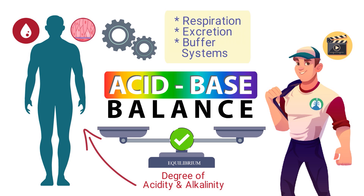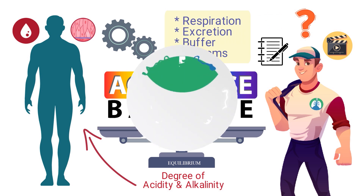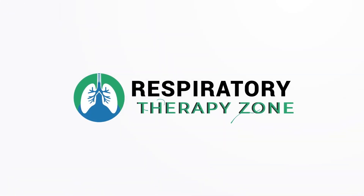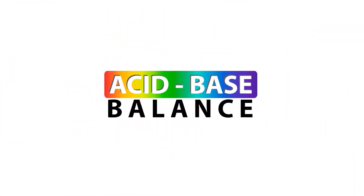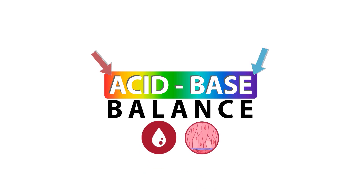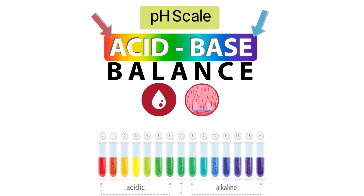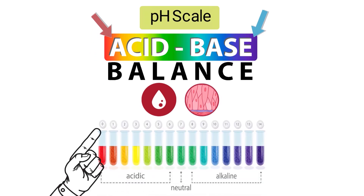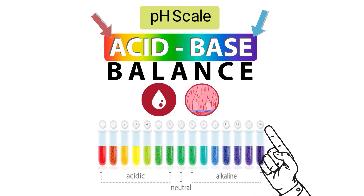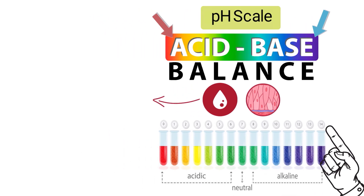In this video, we will discuss the role of acid-base balance in the body and how it is maintained. We will also touch on some disorders that can occur when this balance is disturbed. Acid-base balance involves maintaining adequate levels of acids and bases in the blood and body tissues, which is measured by the pH scale. This scale ranges from zero, which is very acidic, to 14, which is very alkaline.